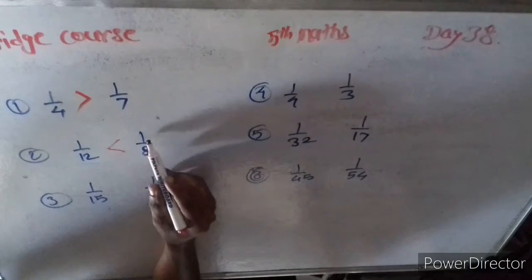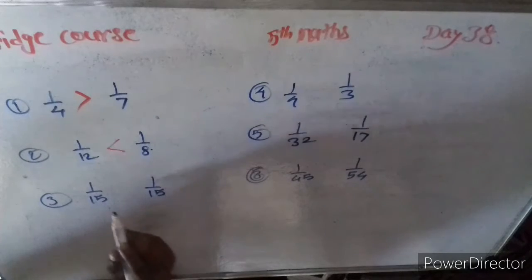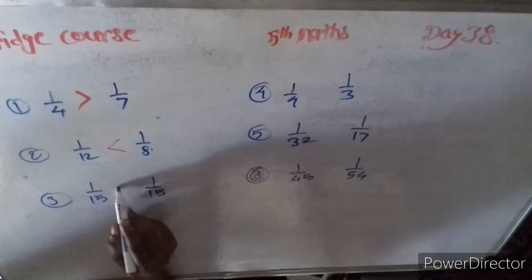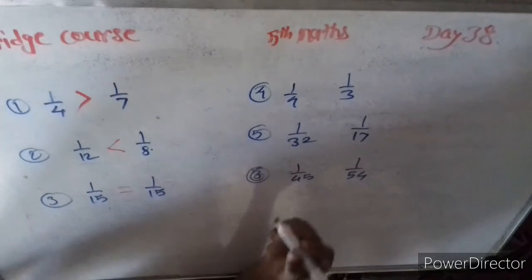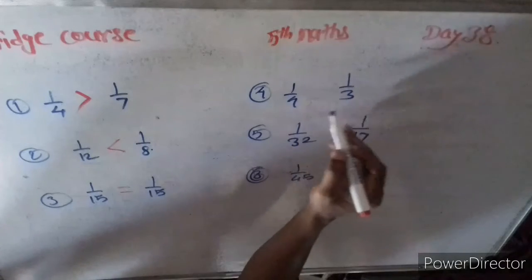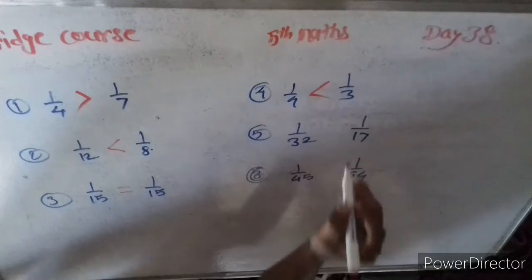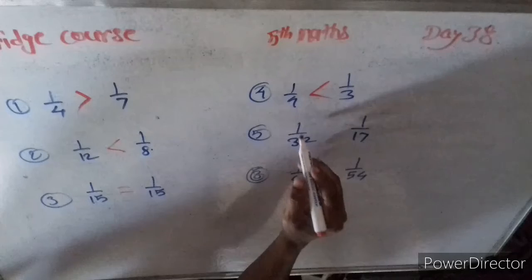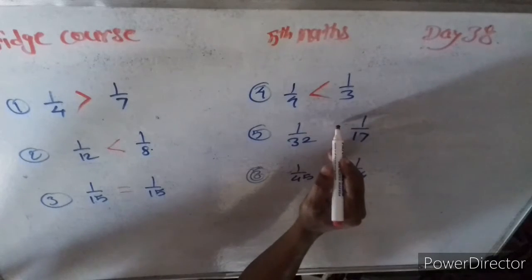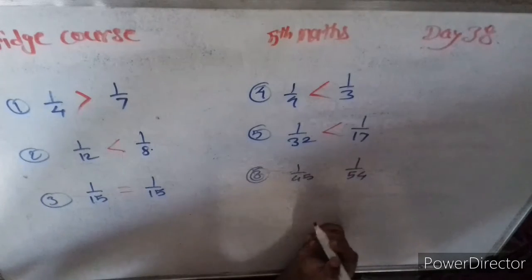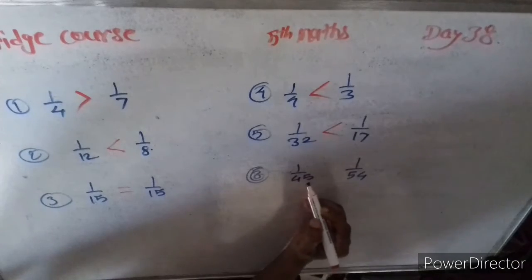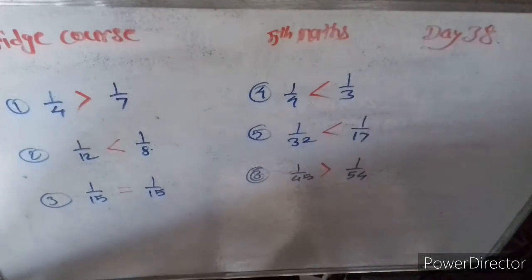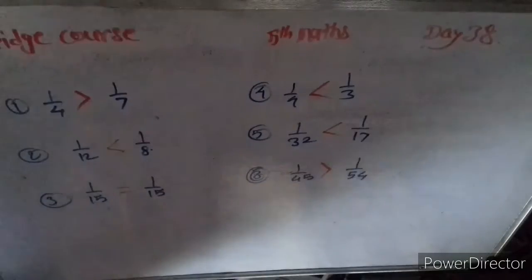One by eight is smaller than one by eight. One by fifteen equal one by fifteen. One by four is smaller than one by three. One by thirty-two is smaller than one by seventeen. And one by forty-five is biggest than one by fifty-four.